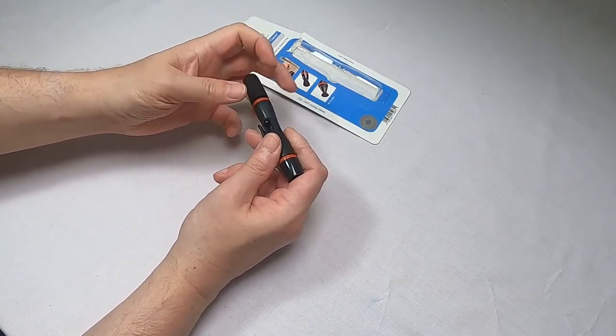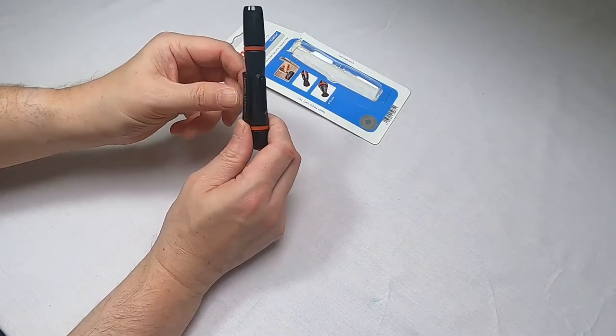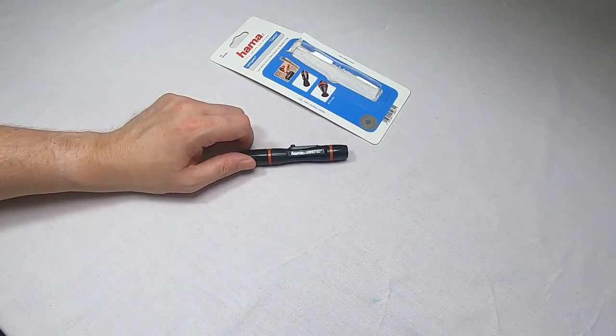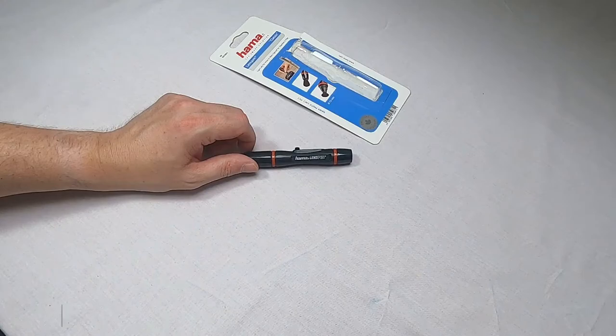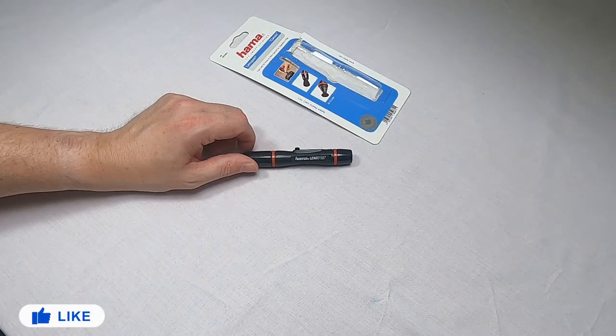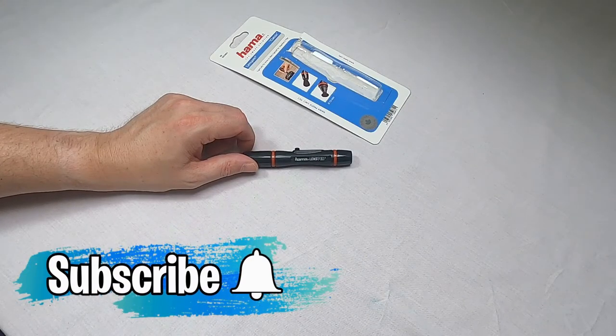So that looks quite good. I'll give you an update on how that's working as I start cleaning things. So that is the Hama lens pen. If you're enjoying these videos and looking at the things I'm using for camera and drone photography, please like and subscribe. Plenty more content coming up. Thank you very much.